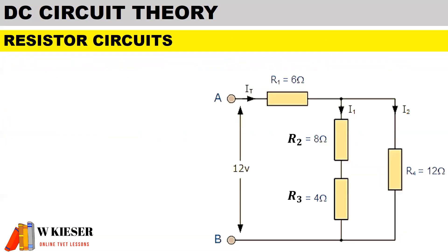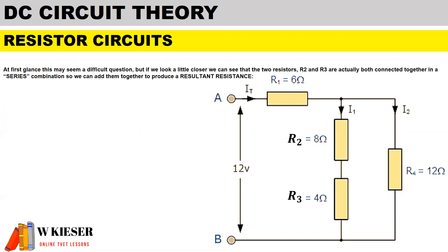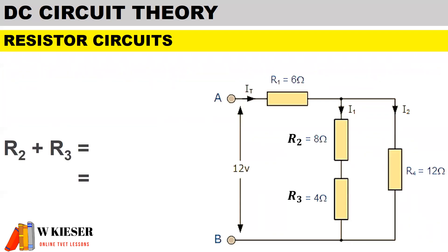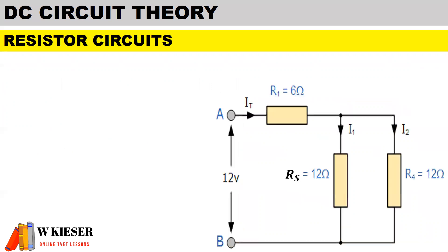This brings us to our first calculation — a resistor combination circuit. At first glance this may seem a difficult question, but if we look closer, we can see that the two resistors R2 and R3 are actually connected together in a series combination. So we can add them together to produce a resultant resistance. Therefore, R2 plus R3 equals 8 Ohms plus 4 Ohms, giving us a series combination of 12 Ohms.